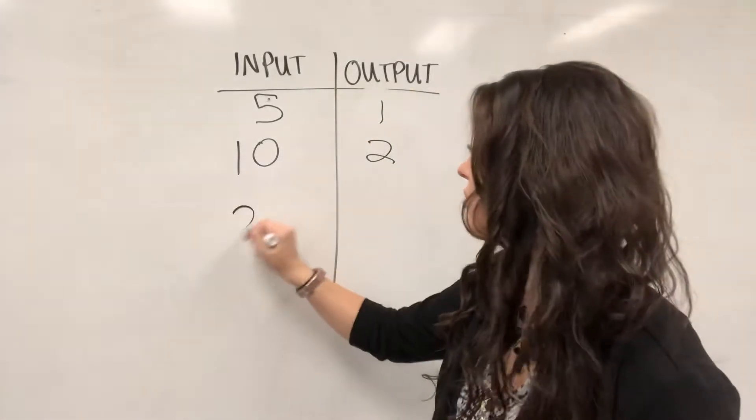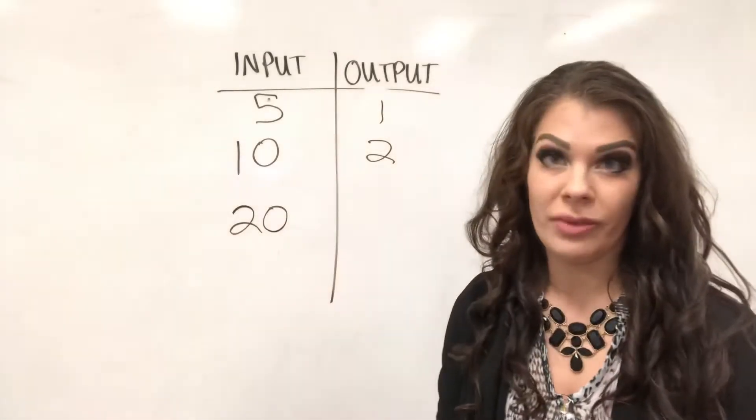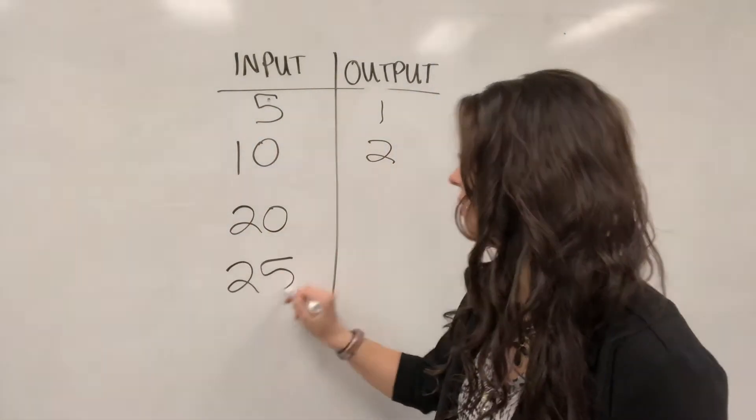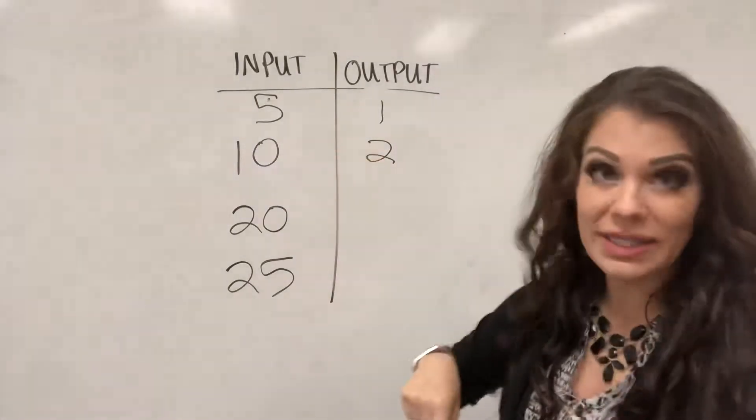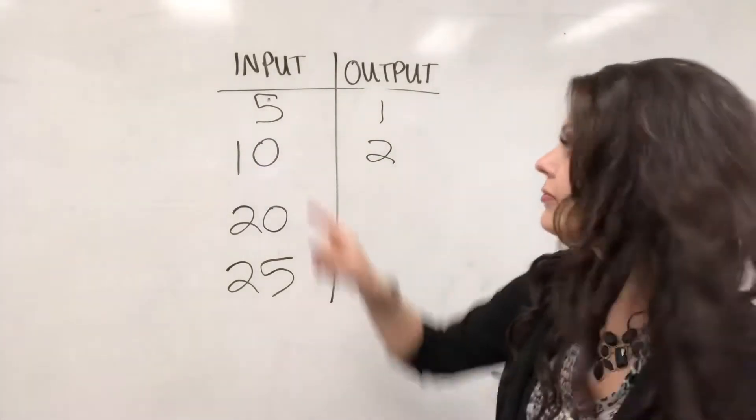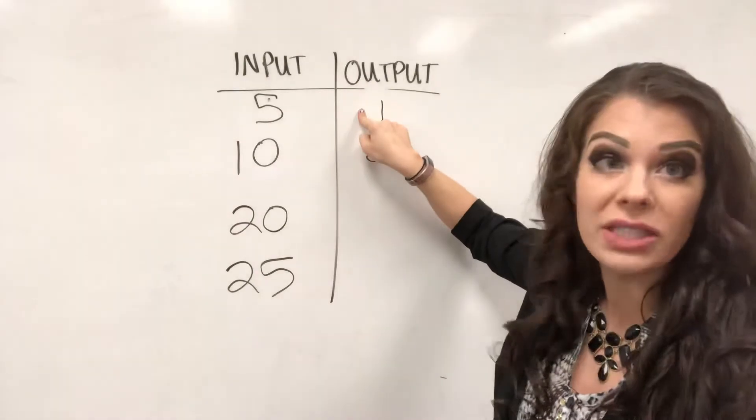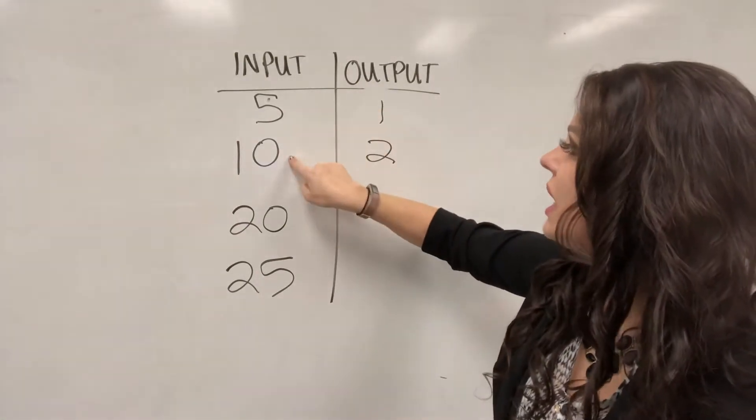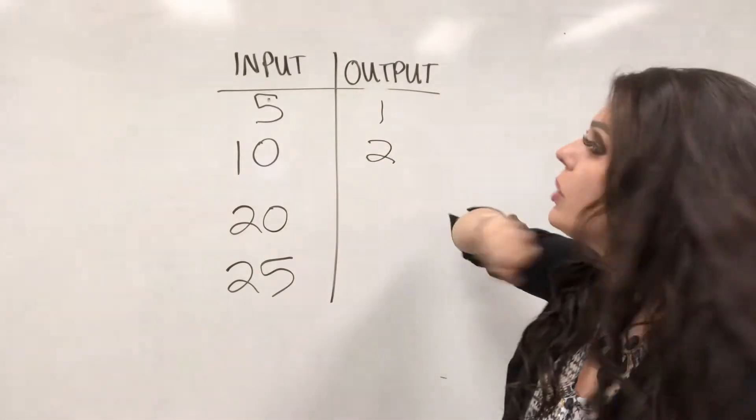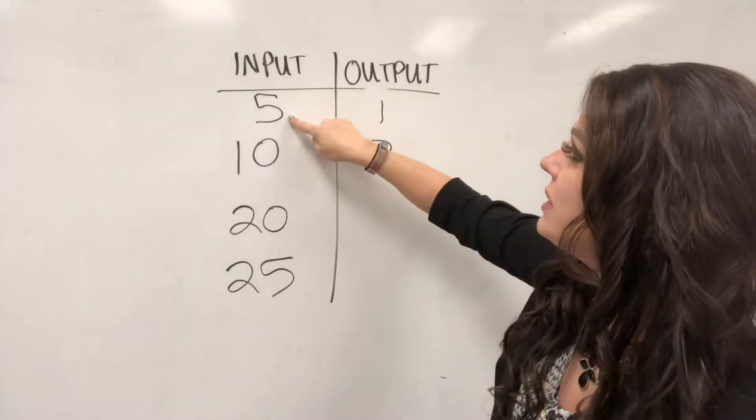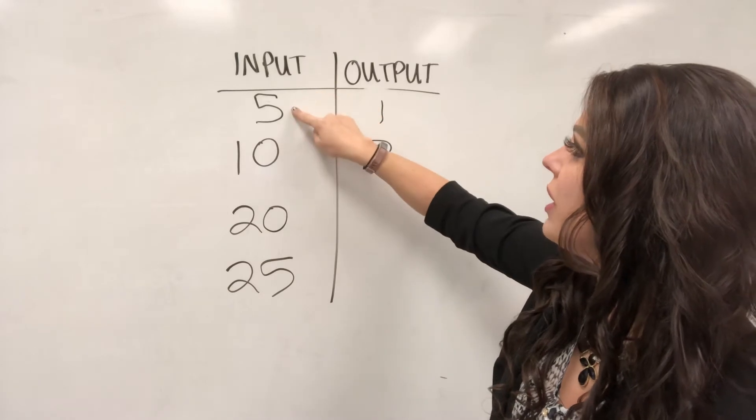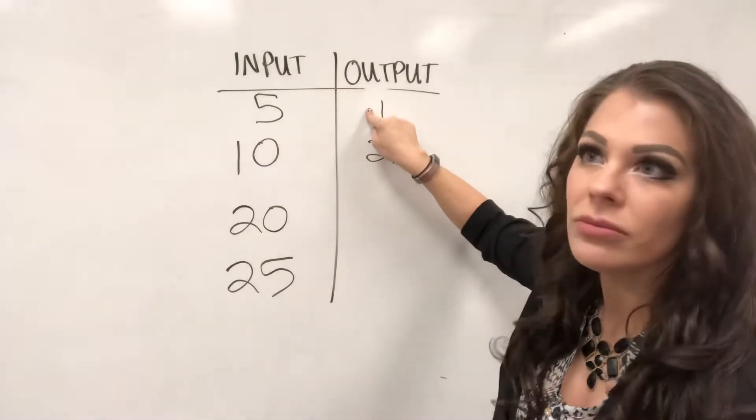Oh, so it's getting smaller. So am I minusing or dividing? 5 to 1, that's minus 4, right? But 10 minus 4 isn't 2. So what am I doing? I have 5 turns into 1. What divided by 5 equals 1? Well, 5 divided by 5 equals 1.